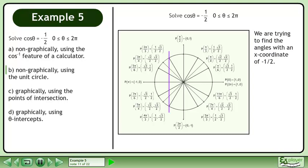We are trying to find the angles with an x-coordinate of negative 1 over 2. The solution is 2 pi over 3 and 4 pi over 3. This is the same result we found in Part A.